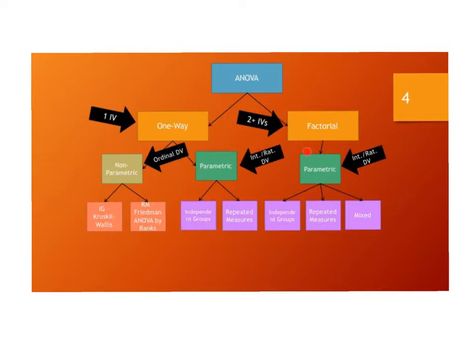Notice, factorial does not have nonparametric options. You have parametric independent groups option, a parametric repeated measures option, the Kruskal-Wallis is a nonparametric independent groups option, the Friedman ANOVA by Ranks is a nonparametric repeated measures option, and depending on how many independent variables you have in your parametric, you can have two or more independent variables.